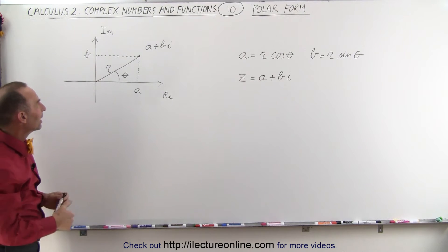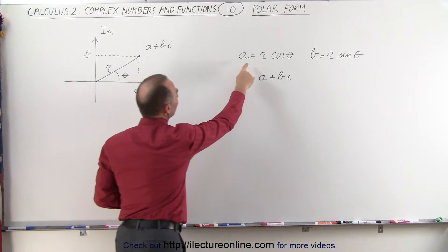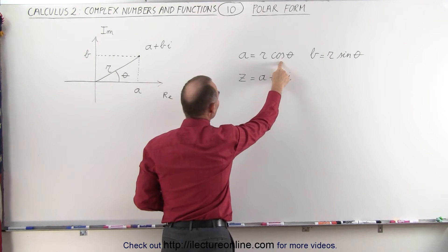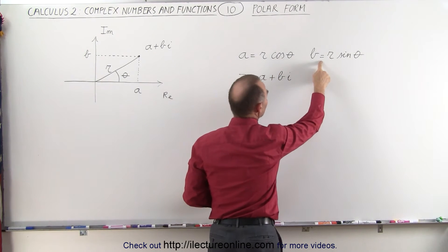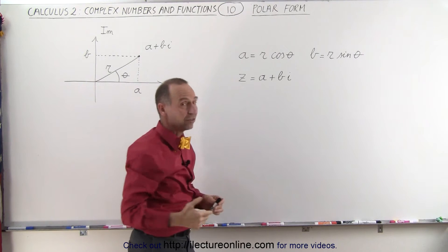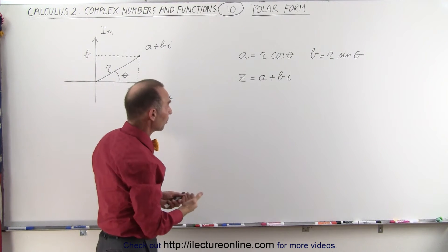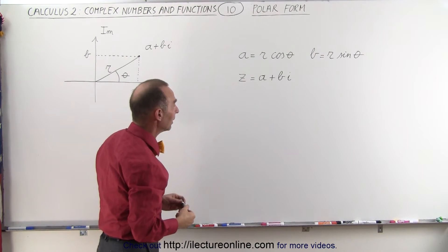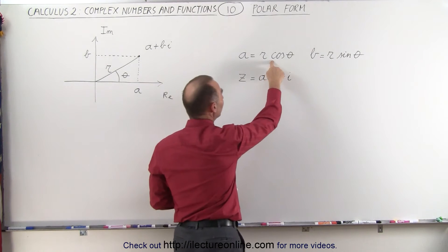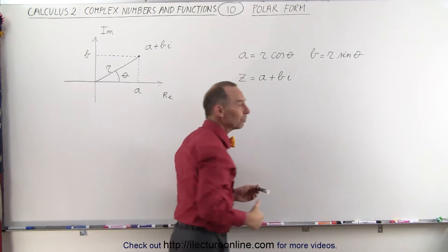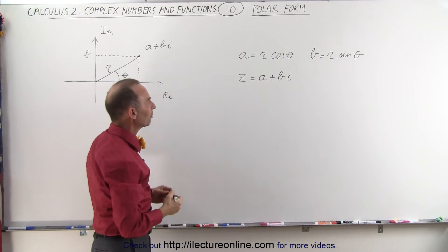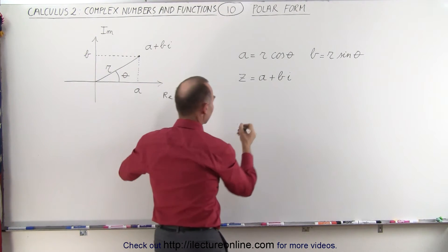Now when we do that, we can say that A can be calculated to be R times the cosine of theta and B can be calculated to be R times the sine of theta. And since Z, the complex number, is equal to A plus B I, we can replace A by this and B like this and then get the new polar representation of the complex number. Let's do that and see what it looks like.